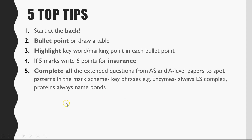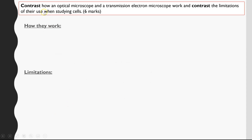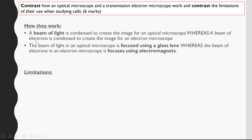Let's have a look at a worked example. I've picked this question: 'Contrast how an optical microscope and a transmission electron microscope work, and contrast the limitations of their use when studying cells.' This was a six-mark question. One way to do it is bullet points. On the page with the question, I would split it straight away into two headings to make sure I'm addressing both parts of the question. First, we'll look at how they work. Because you've been asked to contrast, we have to point out differences. When contrasting or comparing, you need to have the contrasting points all in one sentence — there should always be 'whereas' in the middle.